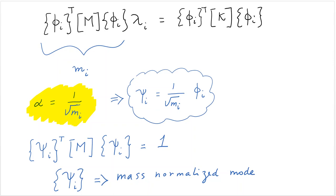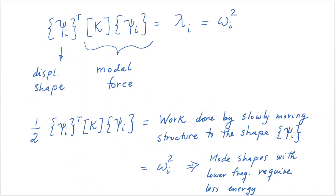We are going to obtain that these are what we call mass normalized modes. Because when you do phi i transpose times m times phi i, when they have been normalized, in this case, we call them psi, psi transpose m psi, that equals to one. These are called mass normalized modes, and if we then rewrite the modal equation, it comes to psi transpose k psi equals to lambda, which is equal to omega squared.